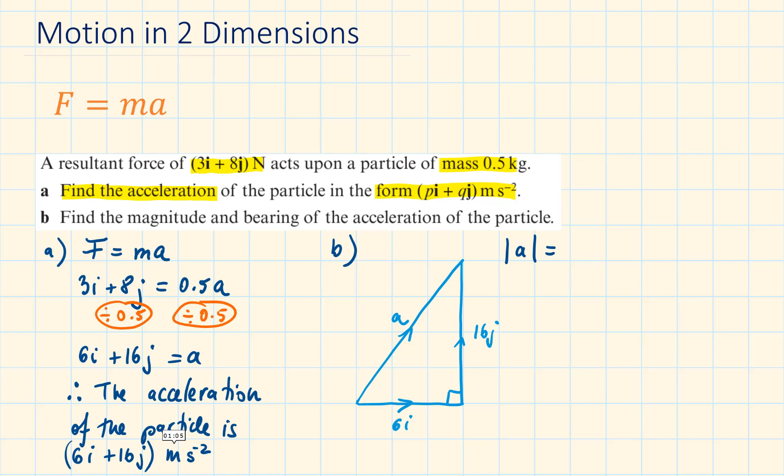And we represent this as A within a modulus sign. Using Pythagoras' theorem, we will have square root of 6 squared plus 16 squared is equal to 2 square root of 73, giving our answer to 1 decimal place will be 17.1 meters per second squared.